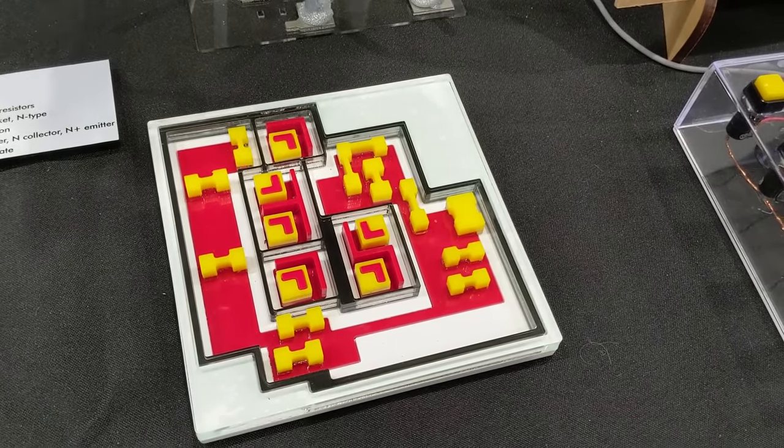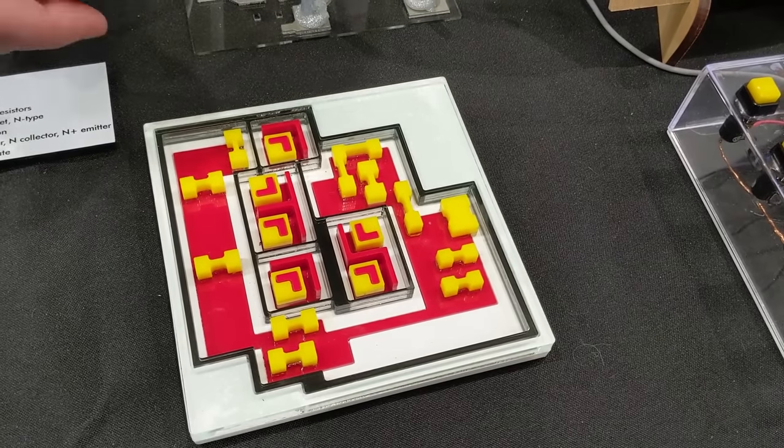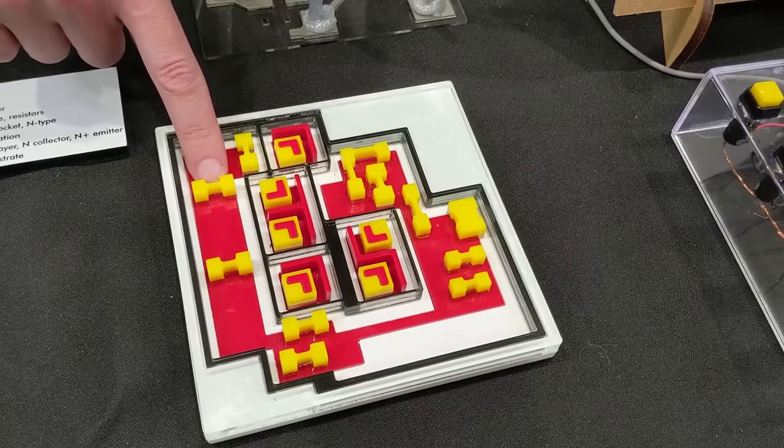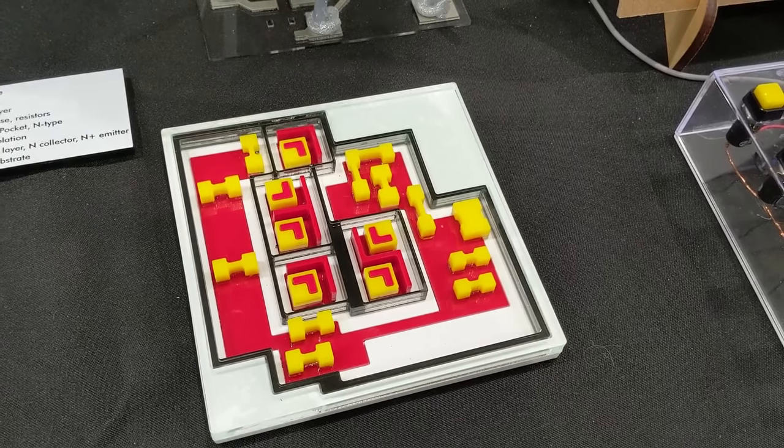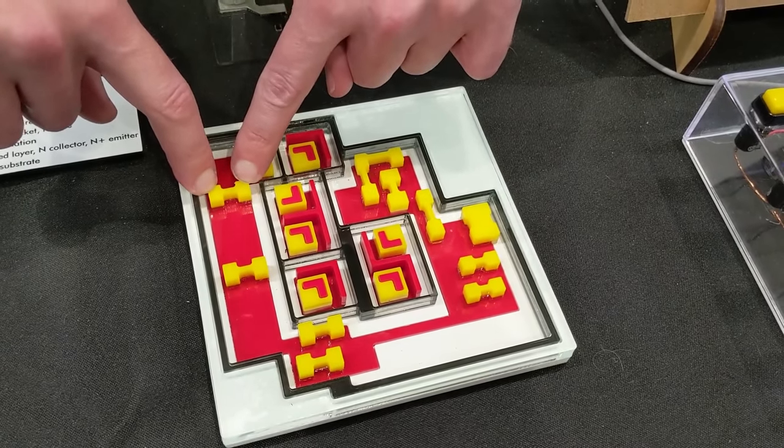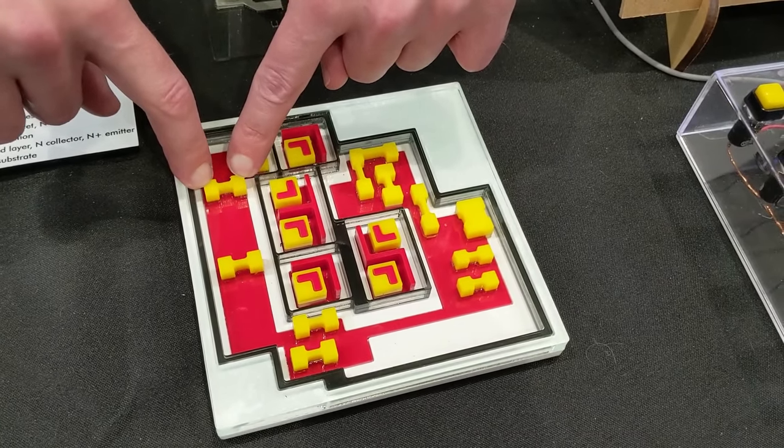The only other component found in this type of IC is actually a resistor. This here, this little dog bone shape, that's one of the resistors. It's a piece of slightly conductive silicon, and if you were to imagine wiring up wires to either end of it, it would conduct, but not great, which is why it's a resistor.